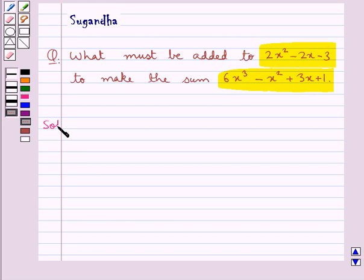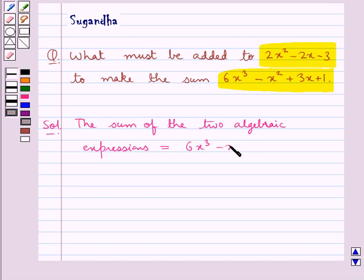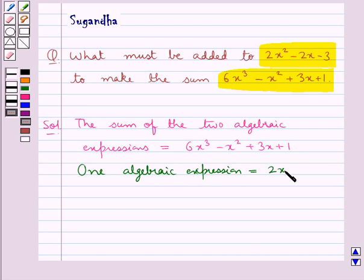Let's move on to the solution now. The sum of the two algebraic expressions is given as 6x³ - x² + 3x + 1. We are given one algebraic expression as 2x² - 2x - 3. So to find the second algebraic expression we subtract the first algebraic expression from the sum.